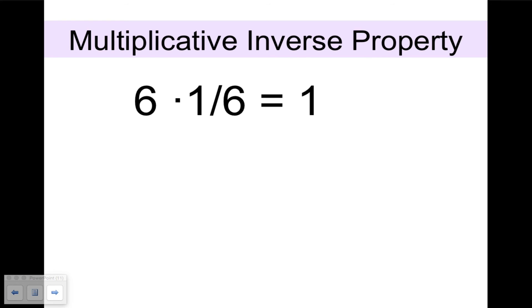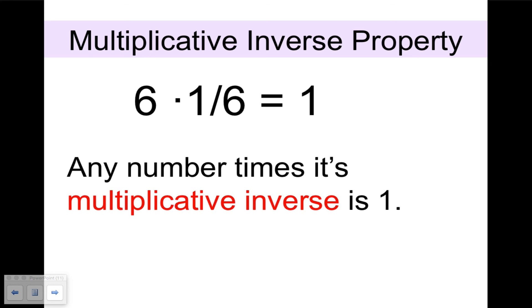The multiplicative inverse property tells us that 6 times 1 sixth equals 1. It says that any number times its multiplicative inverse is 1. For me, this is a synonym for reciprocal, because any number times its reciprocal equals 1. All right, thank you.